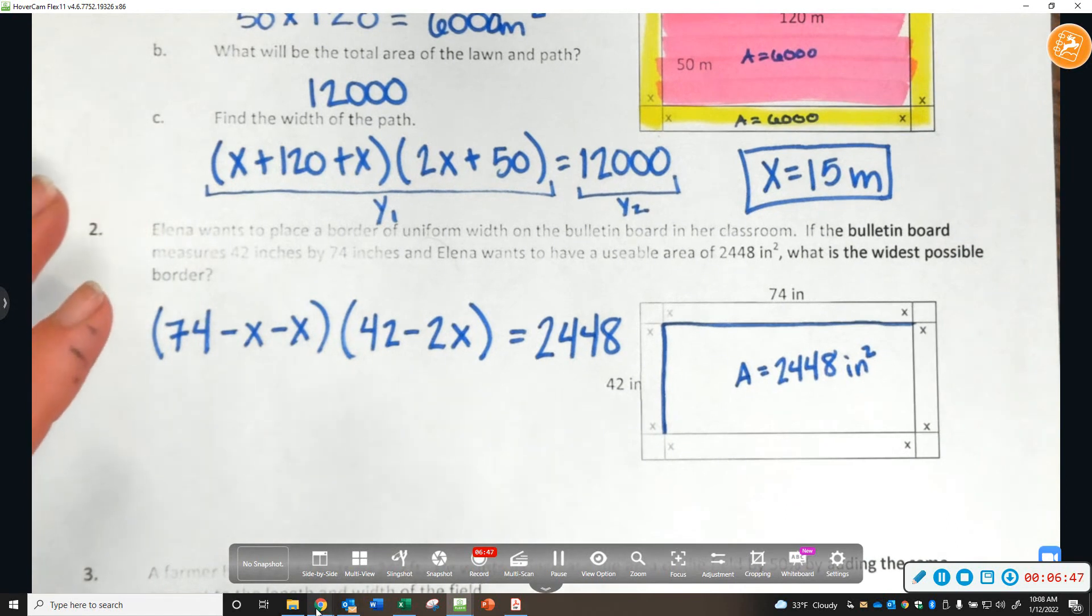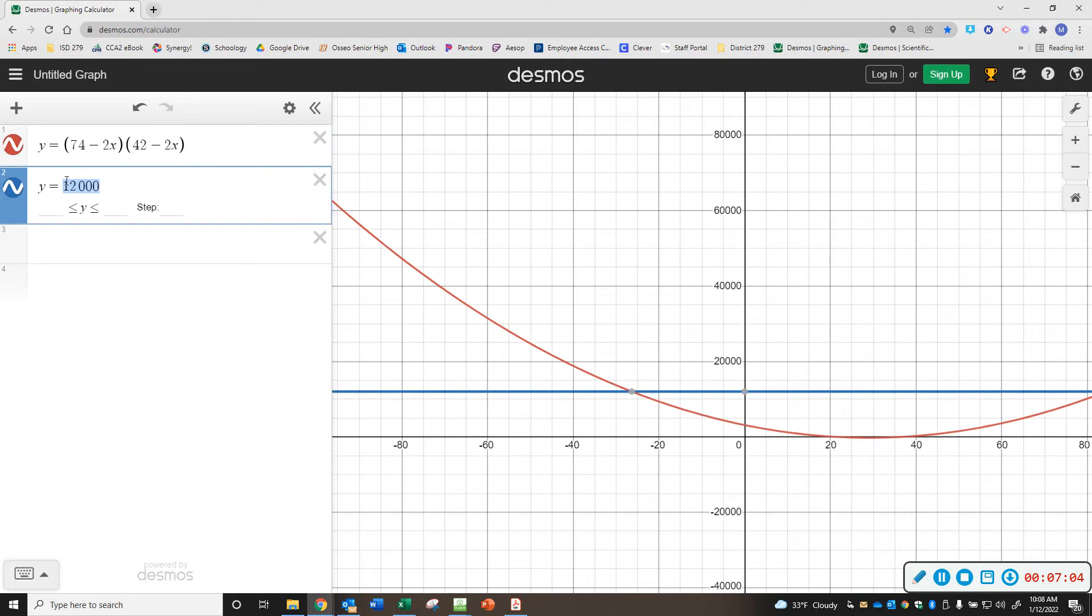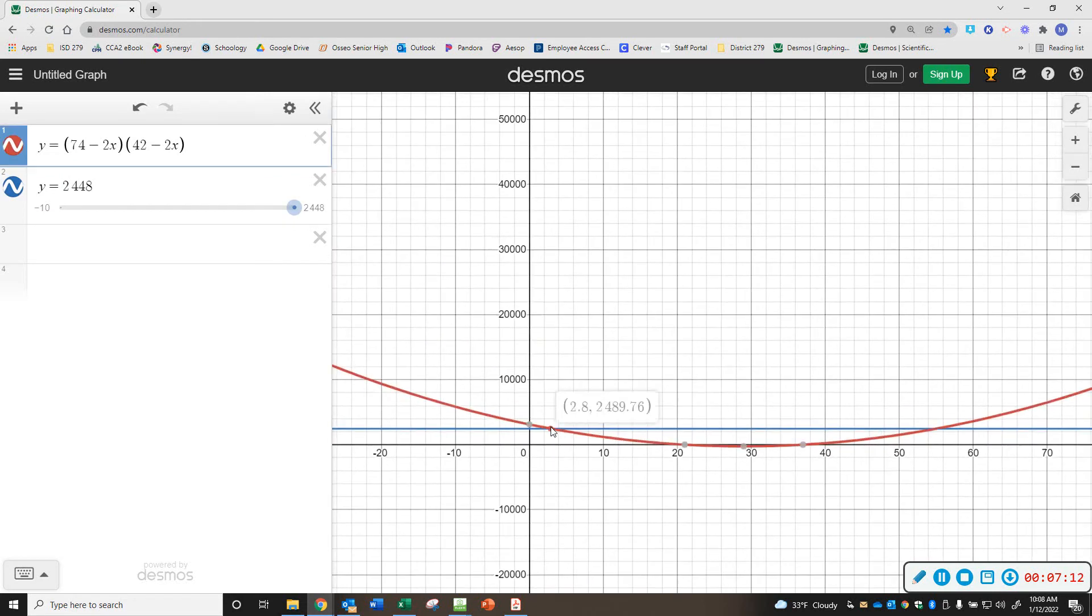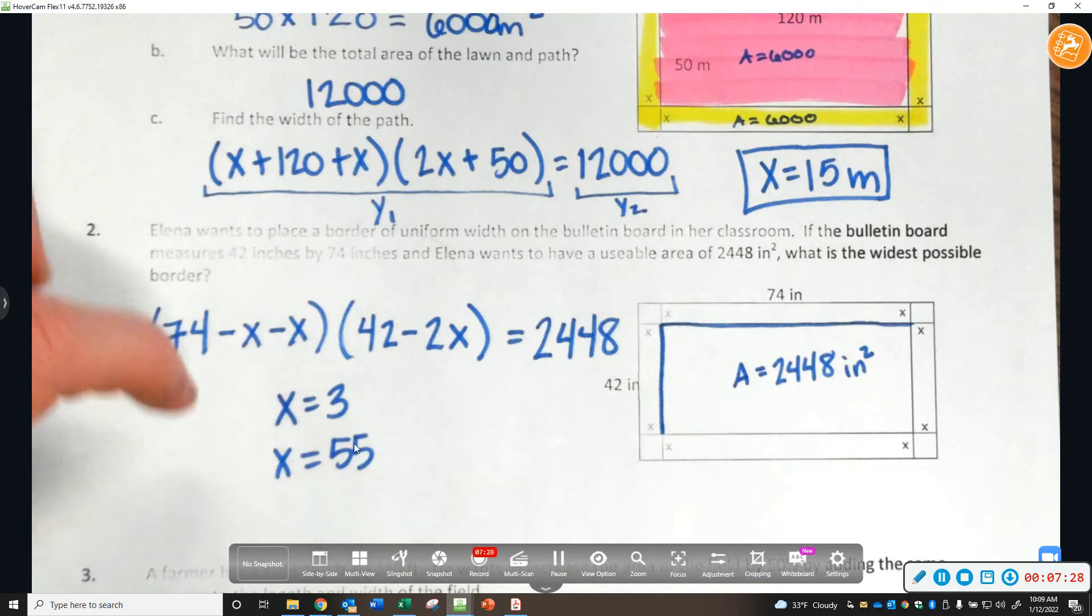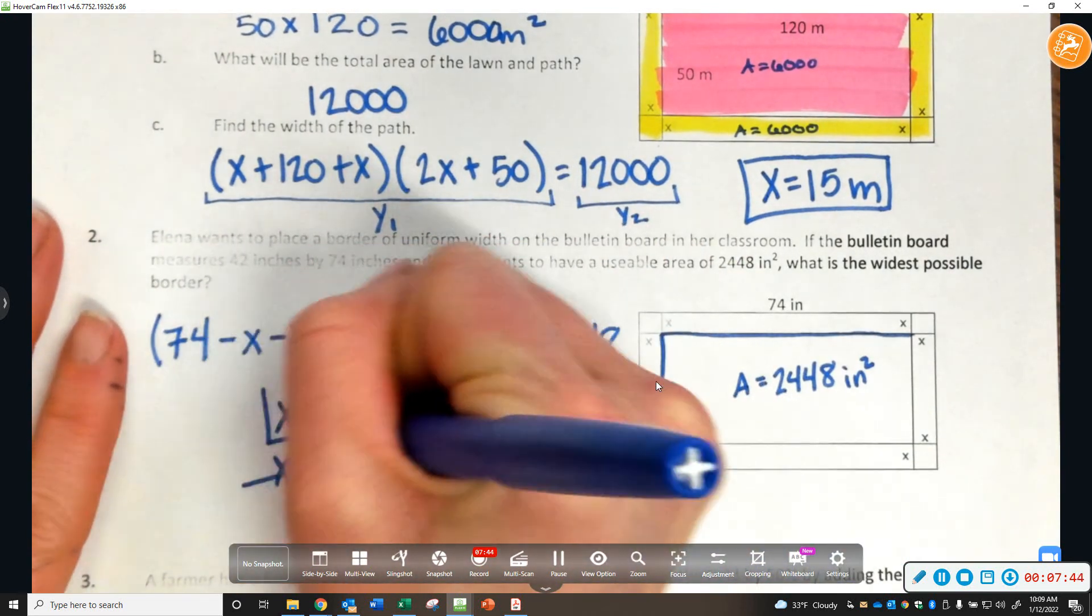Then I go to Desmos and I'm going to put (74 - 2x) and (42 - 2x) and 2448. So here I have 3 and 55. Well, if I go back and look, x equals 3 and x equals 55. Does it make sense that this x is 55 when the whole thing is 42? I can't subtract 55 on both sides. That doesn't make sense. So, it's going to be 3 inches is the border.